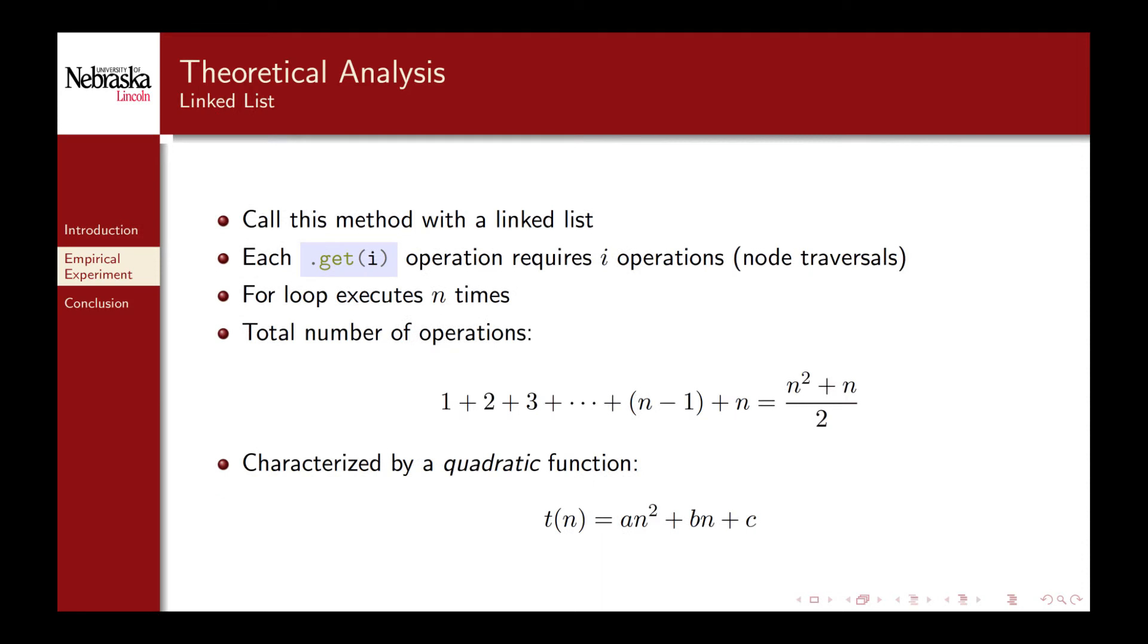If we were to execute this method with a linked list the behavior would be significantly different. Each get method would require i operations. The for loop still executes n times, however each iteration of the for loop is not constant but requires a variable number of operations. We can sum these operations up as follows. The first iteration requires one node traversal, the second requires two, the third requires three, etc.